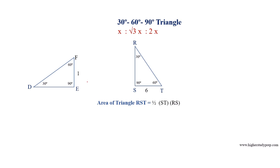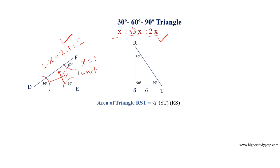Applying this, we can solve example triangles. If the opposite side of 30 degrees equals 1 unit, then since the sides are in the ratio X : √3X : 2X, X equals 1. The hypotenuse (opposite 90 degrees) has length 2X equals 2, and the side opposite 60 degrees has length √3 multiplied by X equals √3.